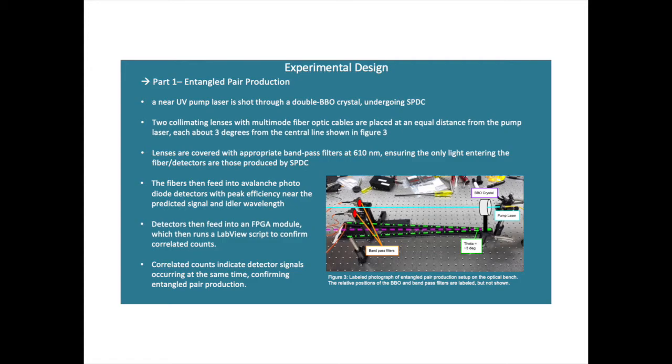Tying this all together, we'll move into the experimental design portion of the project. We start with the near UV pump laser that's shot through a double BBO crystal undergoing spontaneous parametric down conversion, and that's a much more complicated process than I'm going to get into. All we really need to know is that it ends up giving us polarization entangled pairs of photons.